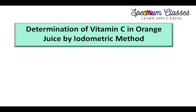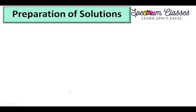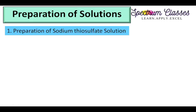Hello everyone, welcome back to Spectrum Classes. In this video I am going to perform a lab activity related to the determination of vitamin C in orange juice by iodometric method. Here are the steps we are going to perform. We are going to perform the lab activity related to the preparation of solutions, but before that I am showing you the calculation part to prepare the solutions.